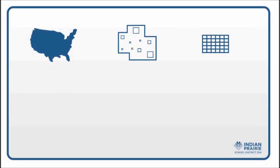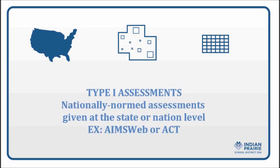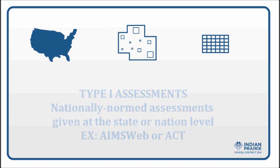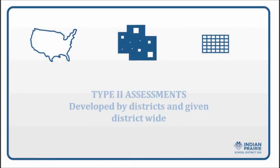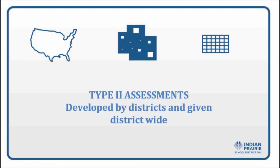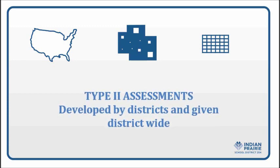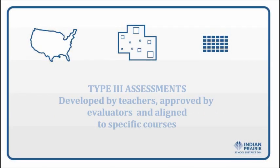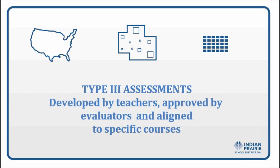There are three major types of measures, or assessment types. Type 1 assessments are those administered either statewide or nationally — for example, AIMS Web or ACT. Type 2 assessments are developed or adopted by school districts and used on a district-wide basis, given by all teachers in the district of a certain grade or course. Type 3 assessments are aligned with specific courses that a teacher and evaluator determine measuring student learning.